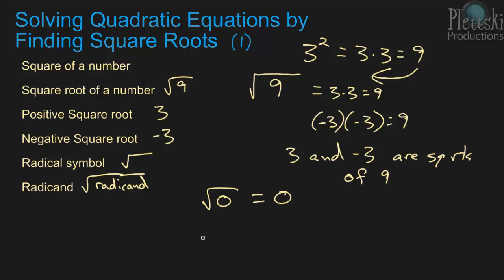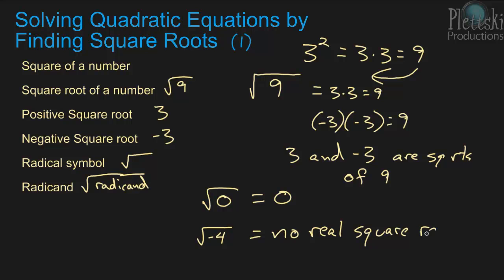Another exception is that you can't take the square root of a negative number. For example, the square root of negative 4 would have no real solution. That would actually be imaginary, and we'll get into that in another lesson.